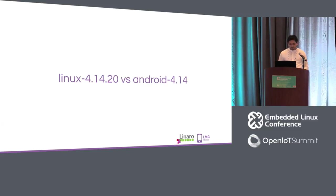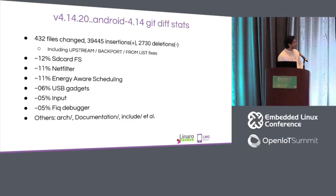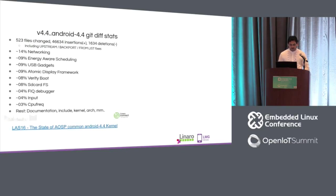Now I'll talk about Android 4.14. From here on, all the patches and status I discuss are related to Android 4.14 Common Kernel. This is the git diff delta. The majority of code is SD card FS. Then we have netfilter changes, energy-aware scheduler, USB gadgets, input devices, FIQ debugger, and other things.